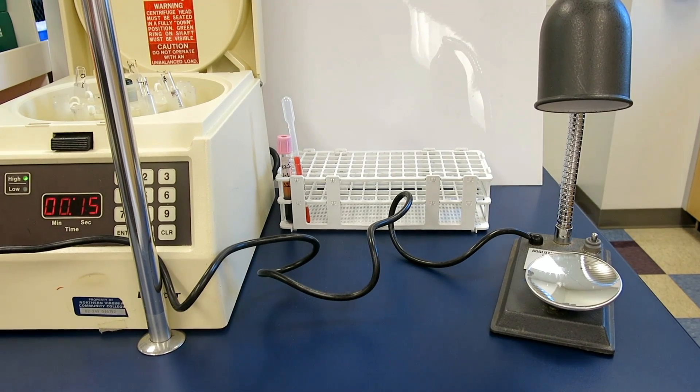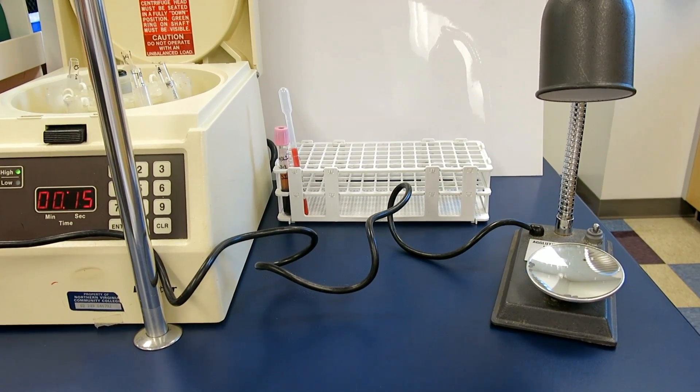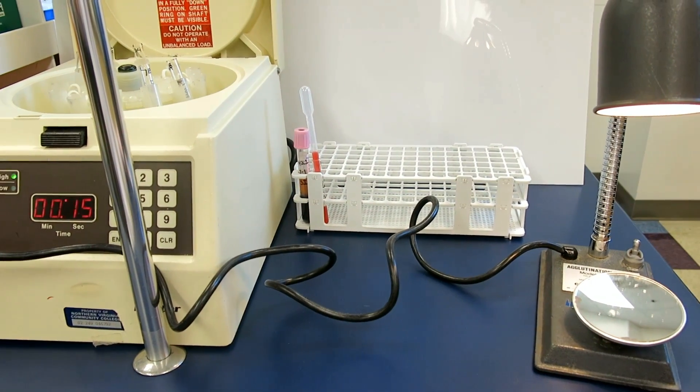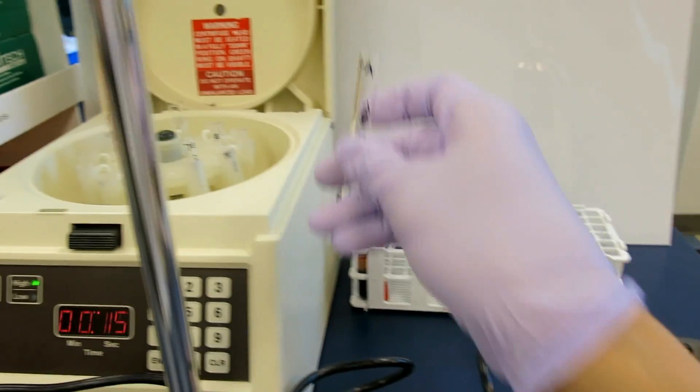This next step is called grading. Read each tube one at a time and record results as you view them. You will need an agglutination viewer to do so.